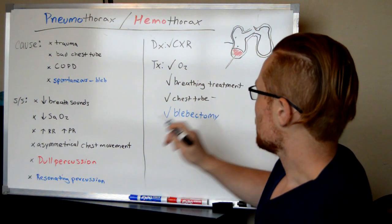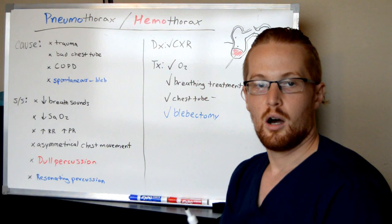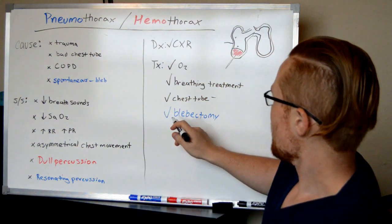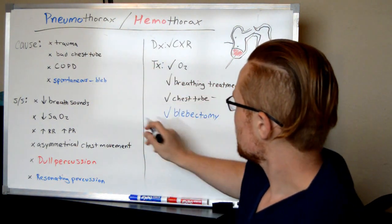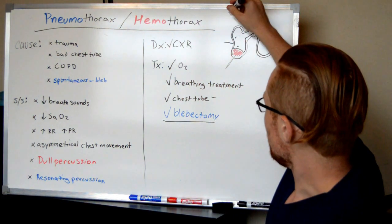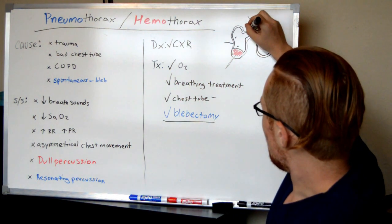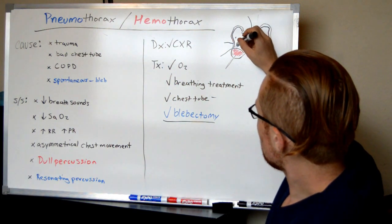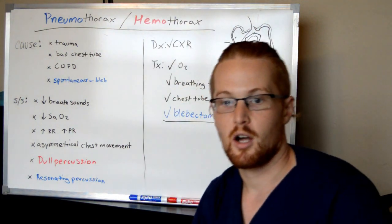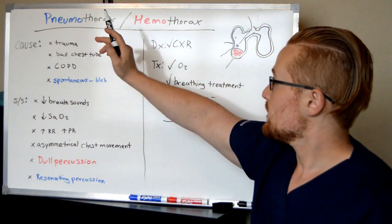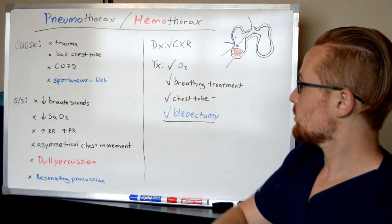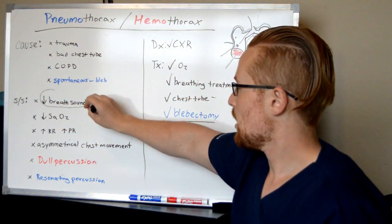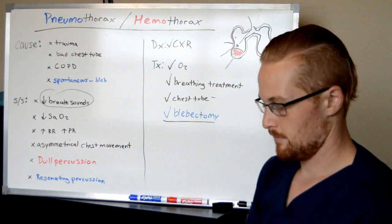In another video I'll talk about chest tube systems and maintaining those. If the pneumothorax is due to a bleb, they can do a blebectomy — surgically going in, whether laparoscopically or endoscopically, to seal off the blebs. So that is pneumothorax and hemothorax. Remember, the big deal is decreased breath sounds.